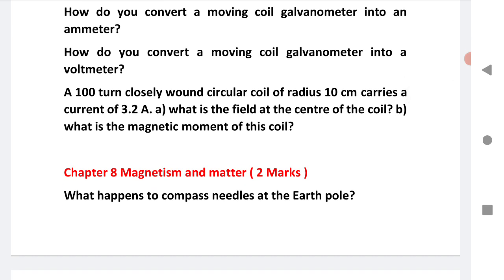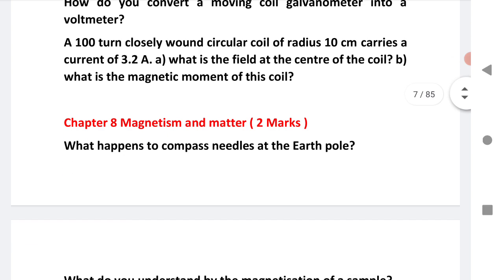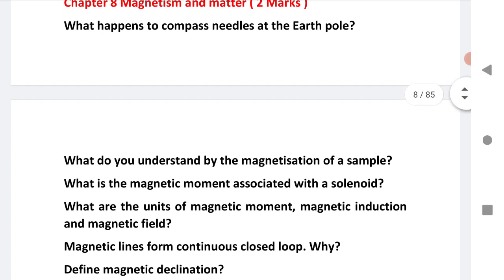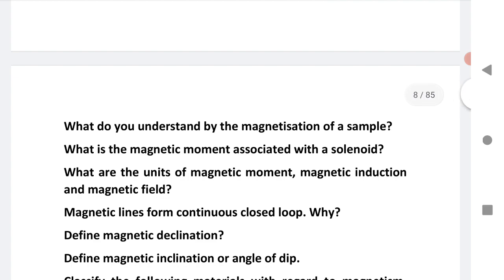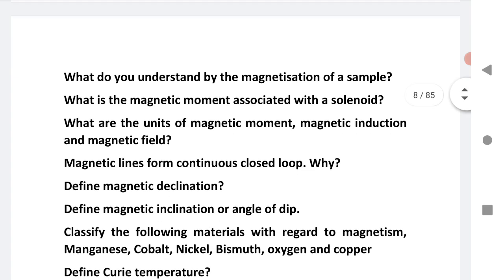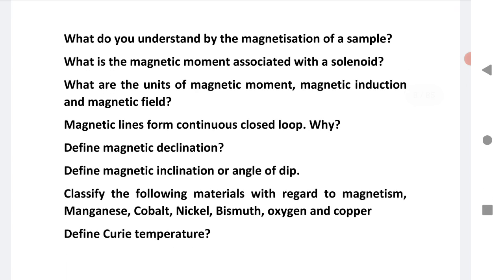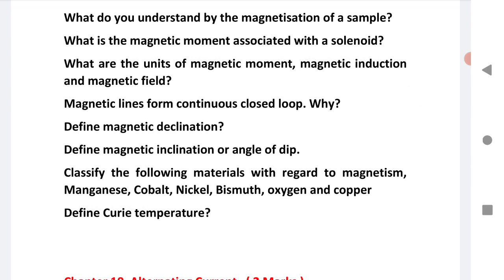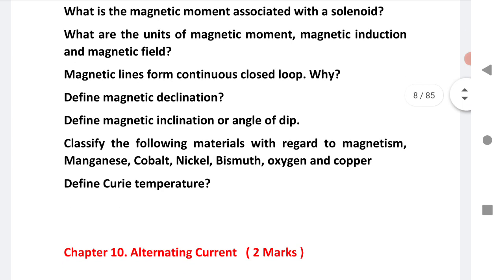Magnetism and matter two marks questions: What happens to compass needle on earth's pole? I am expecting this question will come this year. What do you understand by magnetic moment of a solenoid? What are magnetic moment, magnetic induction, magnetic field? Magnetic lines form continuous closed loops. Next question: magnetic declination, inclination, angle of dip. Next, classify the materials with regard to magnetism: cobalt, nickel, bismuth, oxygen and copper. Last question: define Curie temperature.